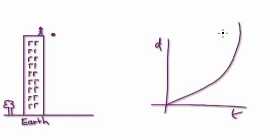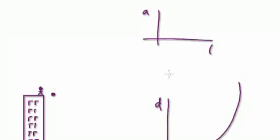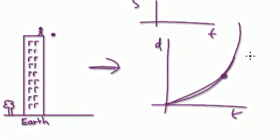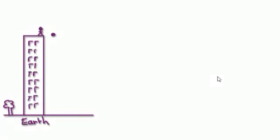What happens when the distance-time graph is a curve? In the past I've given you distance-time graphs where the line is straight, so it's easy to work out the gradient — you just form a triangle. But when the distance-time graph is a curve, you would draw what's called a tangent line, where it just touches the curve.